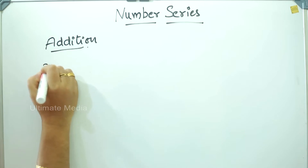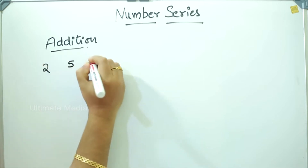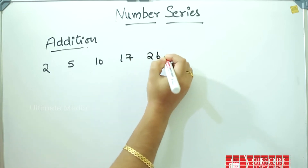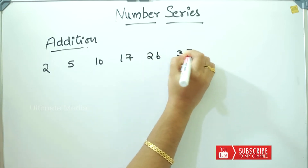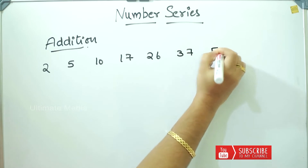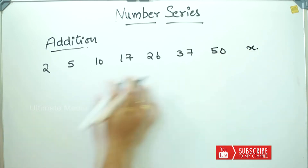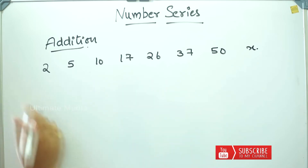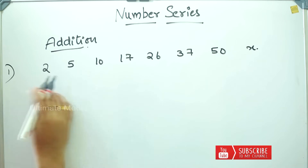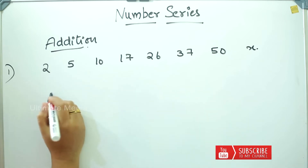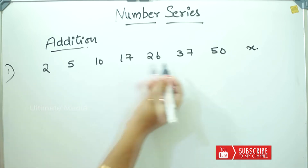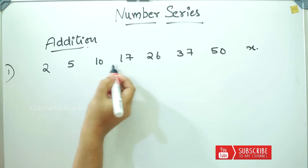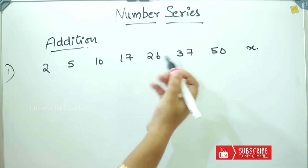Question: 2, 5, 10, 17, 26, 37, 50, x. This is what we need. First question — we don't understand what the pattern is. It is an increasing pattern: 2, 5, 10, 17, etc. It is increasing.